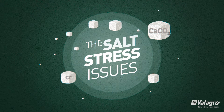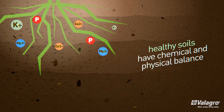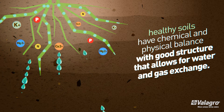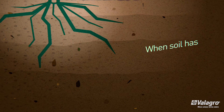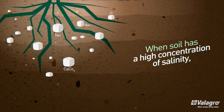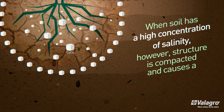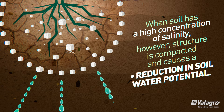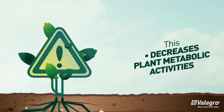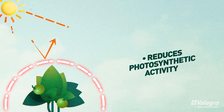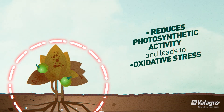Normal healthy soils have chemical and physical balance with good structure that allows for water and gas exchange. When soil has a high concentration of salinity, however, structure is compacted and causes a reduction in soil water potential. This decreases plant metabolic activities and stunts growth, reduces photosynthetic activity, and leads to oxidative stress.